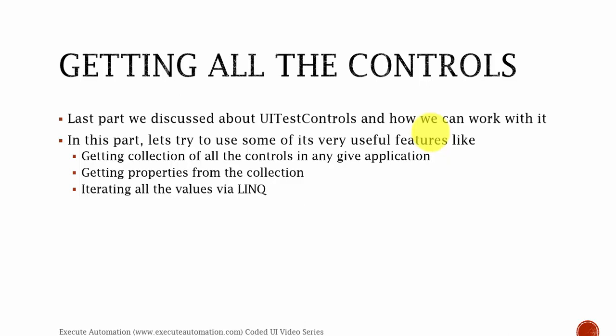In this part, let's try using some very useful functions like UITestControlCollections, which will try to get all the controls, finding all the matching controls of any given application, and then displaying those properties of a particular controls collection into Console.WriteLine. This would be very helpful if you want to get all the different controls of a particular application at any given time. You can iterate those values using a for-each loop, or you can also use LINQ — Language Integrated Query. I'm going to use LINQ to iterate all the values out from a collection and display it right into the Console.WriteLine output.